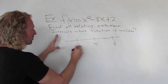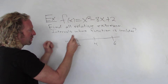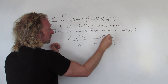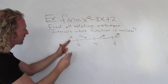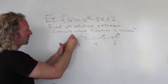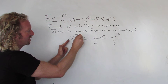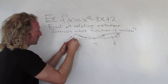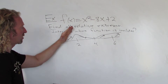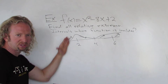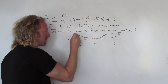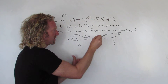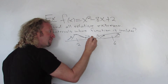Say we have critical numbers at 2, 4, and 6, and you draw your sign diagram for increasing/decreasing. The function is increasing, then all of a sudden starts decreasing, then decreasing, then increasing and increases forever. So at 2 it goes from increasing to decreasing — that's a relative maximum. At 4 it goes from decreasing to increasing — that's a relative minimum.